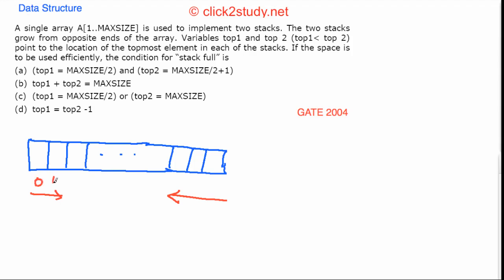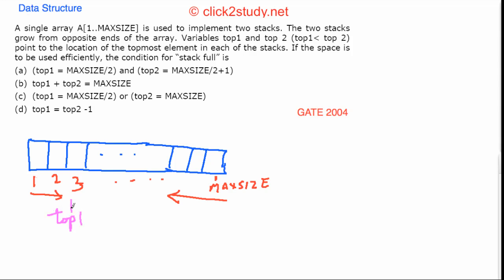The indices in this array start from one, so the first index is one, two, three, and so on. The last index is max size. The top1 pointer will point to the topmost location on the left side, and top2 will point to the topmost element on the right side.